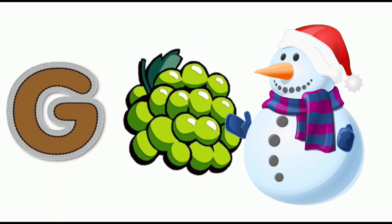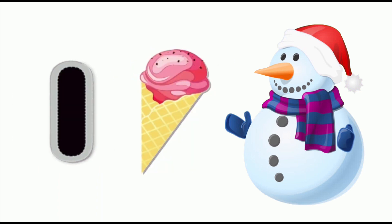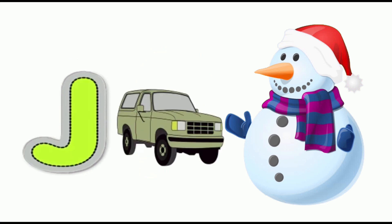G for grapes, grapes, grapes. H for hen, hen, hen. I for ice cream, ice cream, ice cream. J for jeep, jeep, jeep.